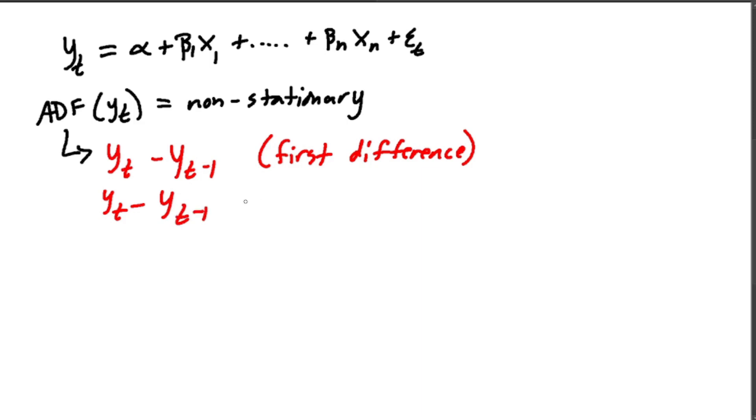And y bar of t is going to get ran through ADF test. And let's say it passes and it is stationary. We call this an I1 process, meaning it has an integration level one. So y of t is stationary when differenced once. And so now let's write the equation again.